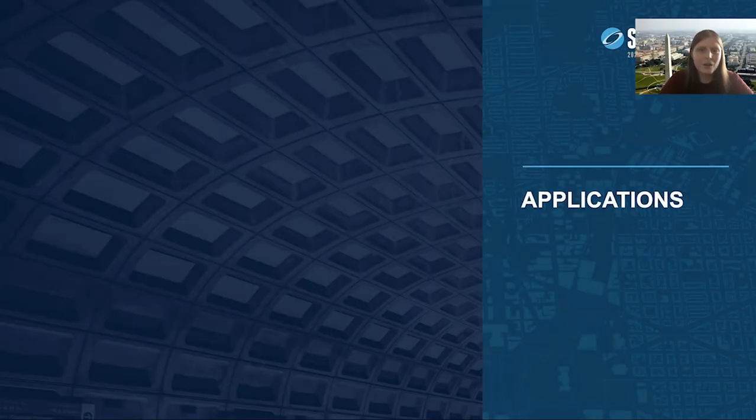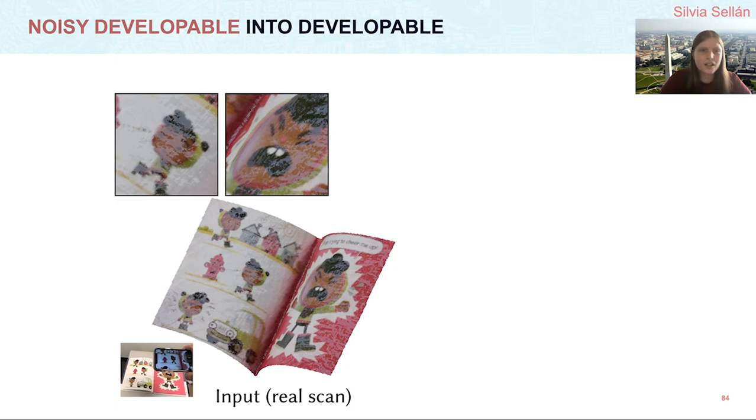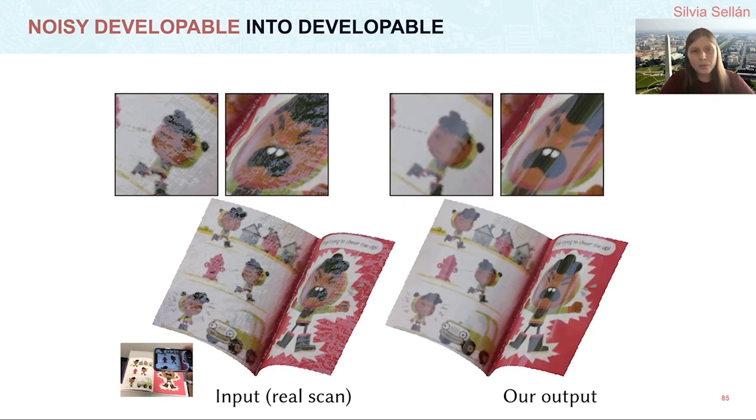Now that we are happy with how our method works, let's see what we can use it for. An immediate application of our method is denoising depth scanning data. In this case, we scan the pages of a book, known to be developable because it is made out of paper, using a smartphone app. The output had unacceptable amounts of noise, which we highlight by rendering with a specular material. Our method recovers the smooth, developable pages of the book. Note how our method does not smooth the crease in the middle between the pages of the book, something that other smoothing methods that do not account for developability would have done.